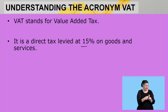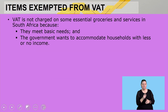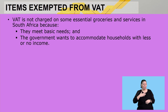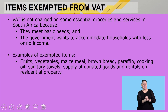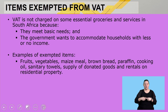VAT is levied at 15% on goods and services. Secondly, on our concept map, we have to determine the VAT exempted items. VAT is not charged on some essential groceries and services in South Africa because they meet the basic need — meaning we need them on a daily basis and the government wants to accommodate households with less or no income. Examples of exempted items include fruits, vegetables, maize meal, brown bread, paraffin, cooking oil, sanitary towels, donated goods, and rentals on residential properties.